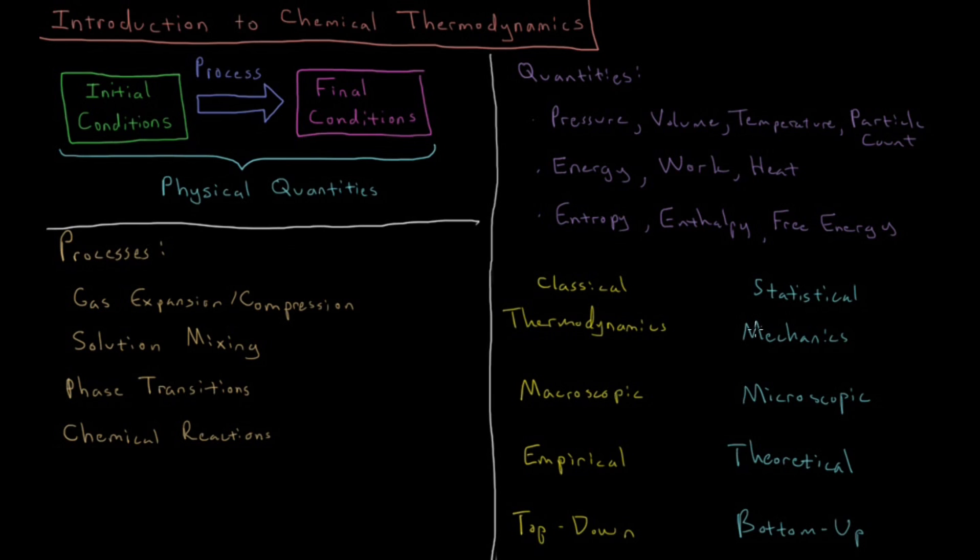We start by looking at the properties of a single molecule or a few molecules and then derive up from there what must the behavior be of an entire cylinder of gas or an entire solution of some liquid or some mixture. So, this is what we're going to look at primarily in this playlist. We're going to look at things like these different quantities of energy and heat and work. We're going to look at a little bit of statistical mechanics, looking at the microscopic level, and then try to use that to explain and understand better these empirical macroscopic observations which form the bulk of thermodynamics.